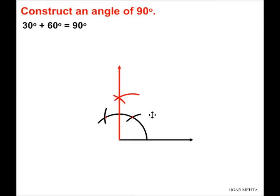So that completes my 90 degree construction. If you see here, right from this point, right from this point till here is 60 degrees and from this point till here is 30 degrees. So from this point till this point, this whole turn is equal to 90 degrees. So that's how we construct an angle of 90 degrees.